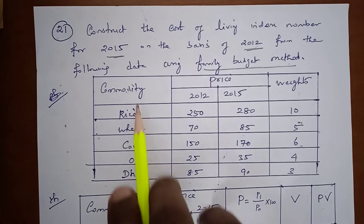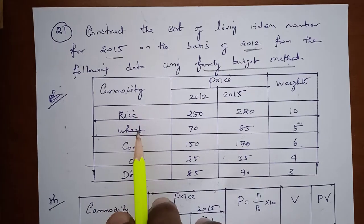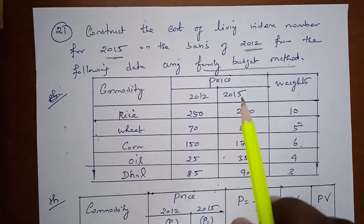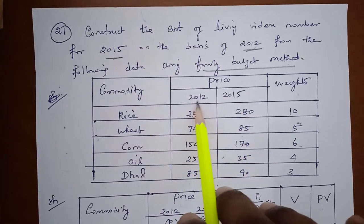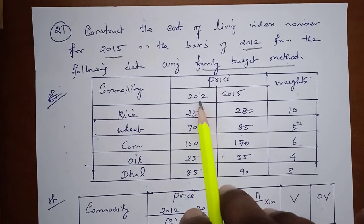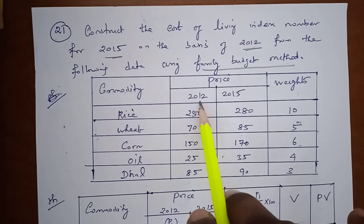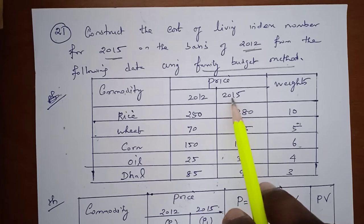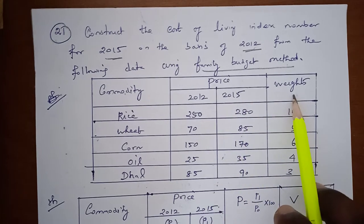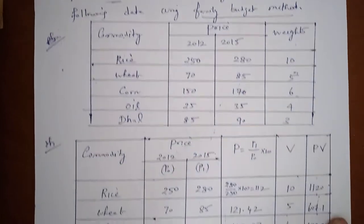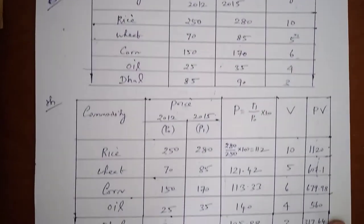The commodities given are rice, wheat, corn, oil, and dal. The corresponding price values are given for 2012 and 2015. The 2012 values represent the base year price, and the 2015 values represent the current year price. The corresponding rates are given, and we will now apply the cost of living index number formula.